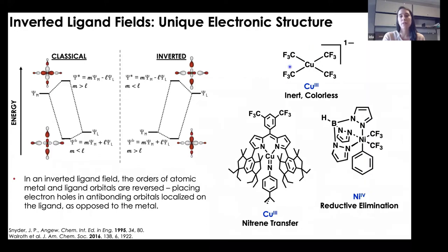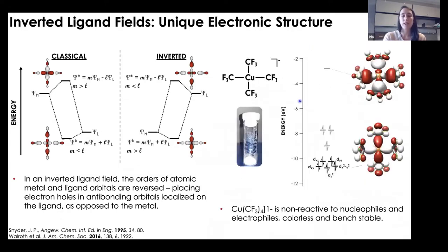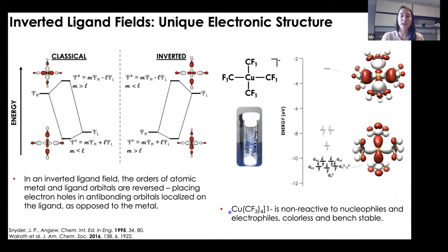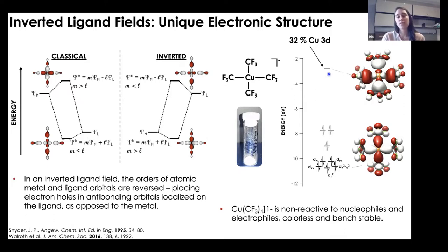Starting with the copper tetrakis CF3 complex — it is both inert and colorless, stable on the benchtop, and white. Probably not what you'd expect for a formally D8 high-valent species. Back in 1995, Snyder suggested this species is better described as D10 or copper I, as it is non-reactive to nucleophiles and electrophiles, colorless, and bench stable. Running a TDDFT calculation on this complex, the molecular orbital diagram suggests an inverted ligand field where the metal orbitals are pulled down to lower energy, and the LUMO has only about 32% copper 3d character. The question becomes: is it valid to refer to this as physically D8 if we're only missing about 60% of an electron?